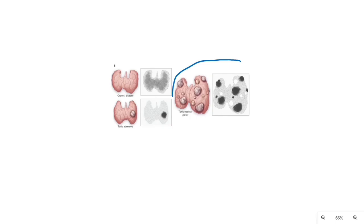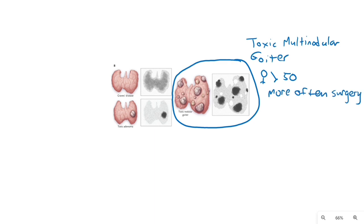Toxic multinodular goiter is a little different than Graves. This usually occurs in women over 50, and can be related to hyperplasia secondary to chronic TSH stimulation. It's treated with surgery more commonly, but can also use radioactive iodine in the frail or the elderly.